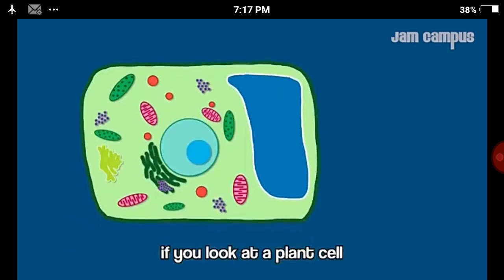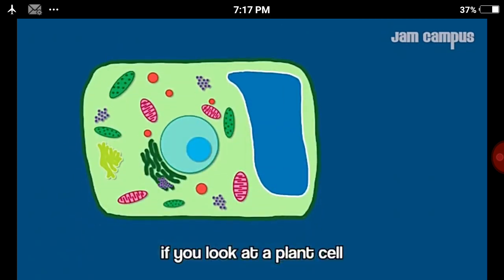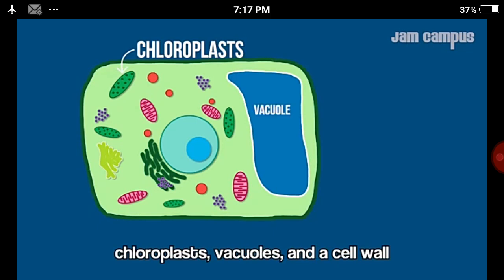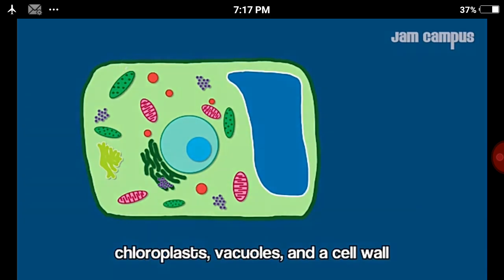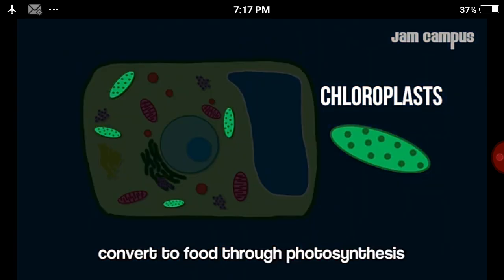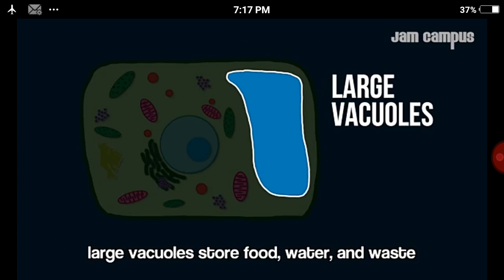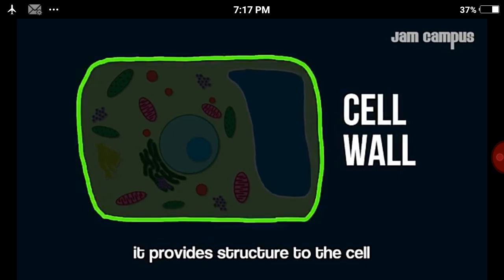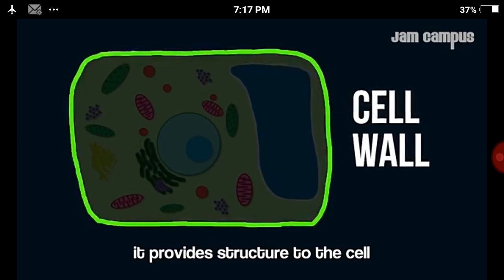If you look at a plant cell, they have a few different organelles: chloroplasts, vacuoles, and the cell wall. Chloroplasts take in the sun and convert it to food through photosynthesis. Large vacuoles store food, water, and waste. The cell wall is the outer rigid layer — it acts as the protector and provides structure to the cell.